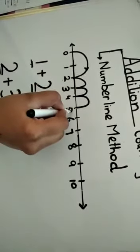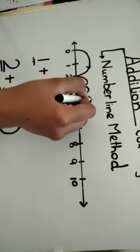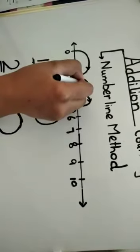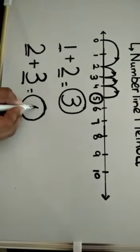So where we reach? We are on number five. Now I am drawing the arrows over here. So when I add two and three it becomes equal to five.